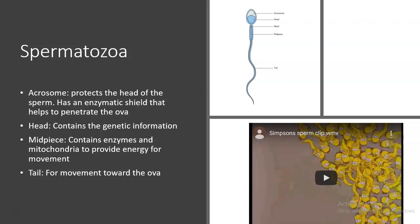Looking at spermatozoa: the acrosome is the top portion — like a helmet that protects the head of the sperm and has an enzymatic shield that helps penetrate the female ova. The head contains genetic information that the sperm passes on when it connects with the ova. The mid piece contains enzymes and many mitochondria to provide energy for movement. The tail is a flagella for movement toward the ova.